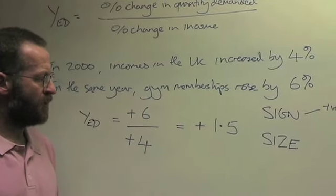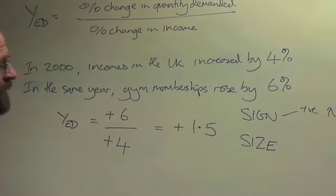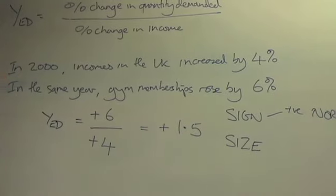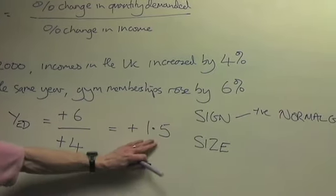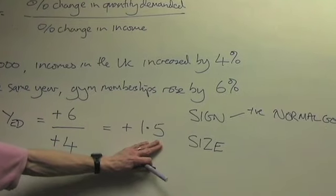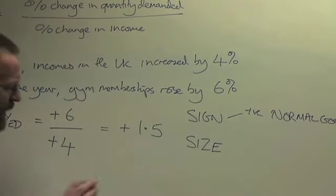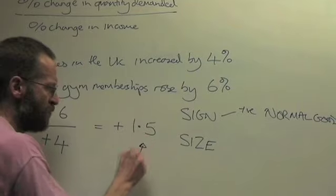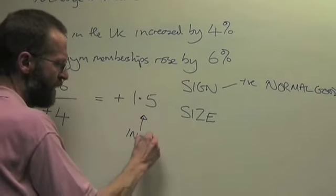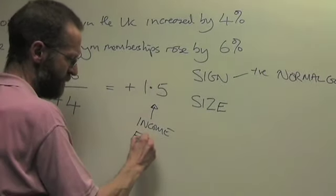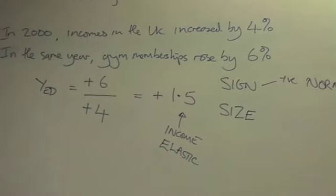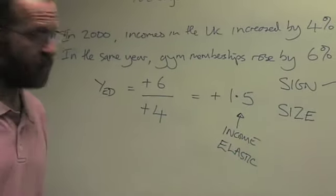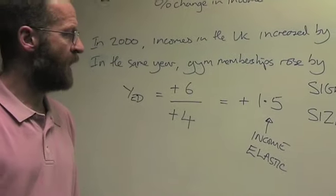The second thing you can do is look at the size of the number. Once again, you compare it to 1. In this case, we've got a number 1.5, which is evidently greater than 1. So what we've got here is a product which is income elastic. In other words, demand for this product will vary more than proportionately to a change in income.